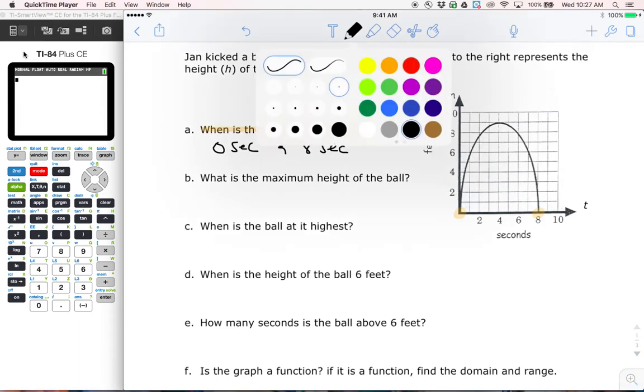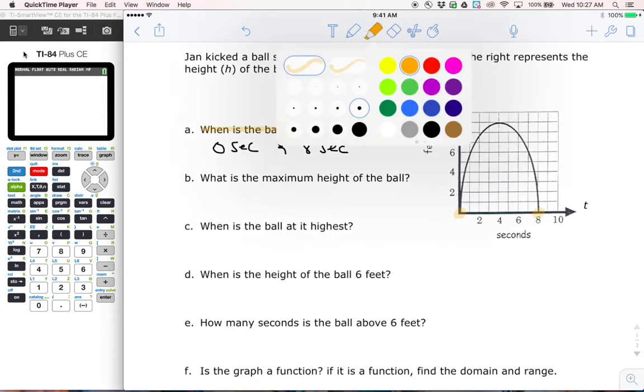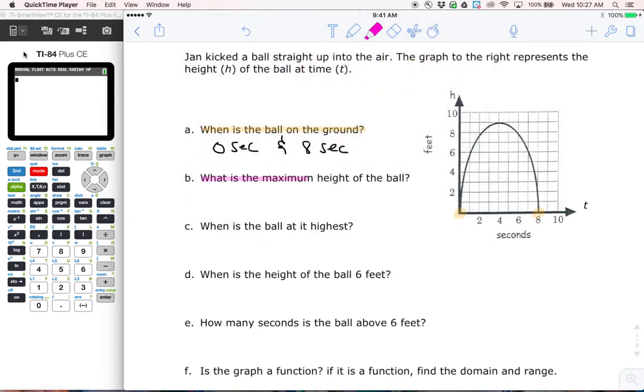Let's see the next question here. What is the maximum height of the ball? And so in this instance, we're looking to see how high did it get at its highest, and that point is going to be right here. That's the highest point on the graph. And if we look at this, we can see that the maximum height, so you go to the y-axis, right, because feet, and we can see that it hits right here at about nine feet.